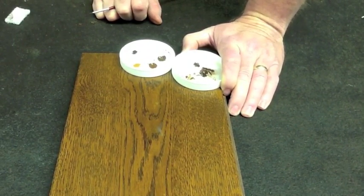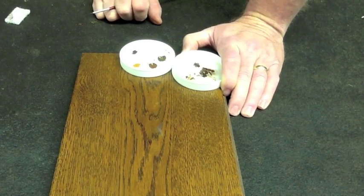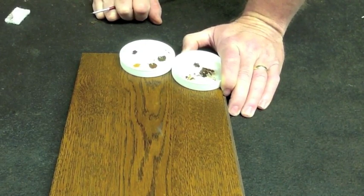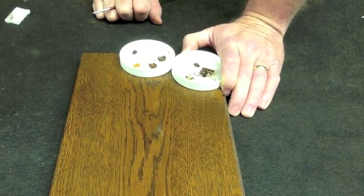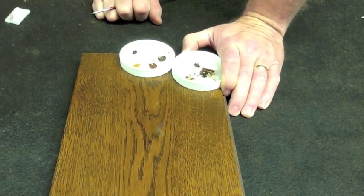That will also give us a true color of what we have. The powders tend to lighten up a little bit as they dry. When you re-wet them with a clear coat, you'll get the color that you see.